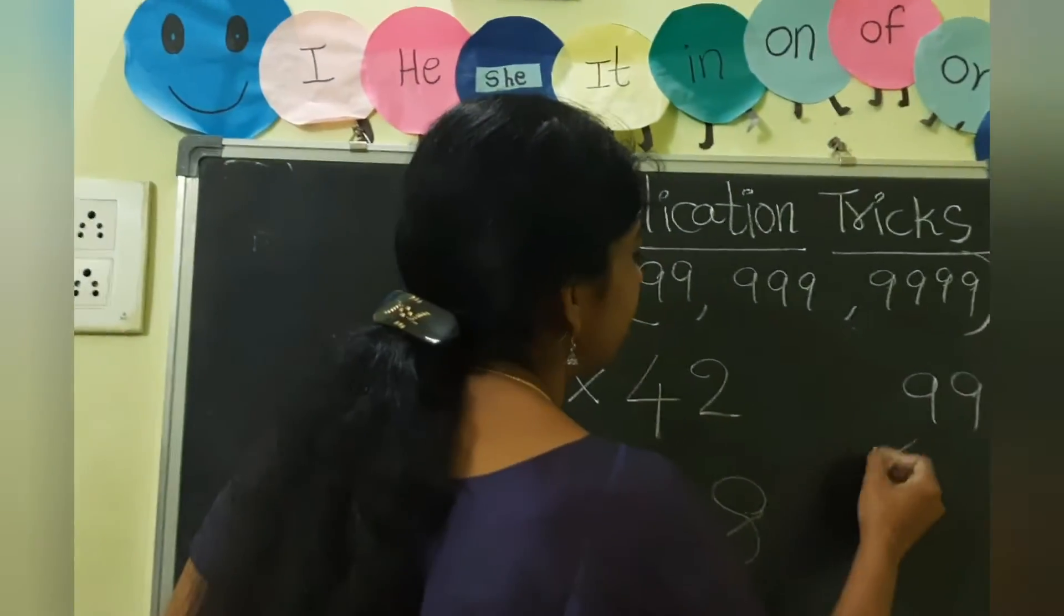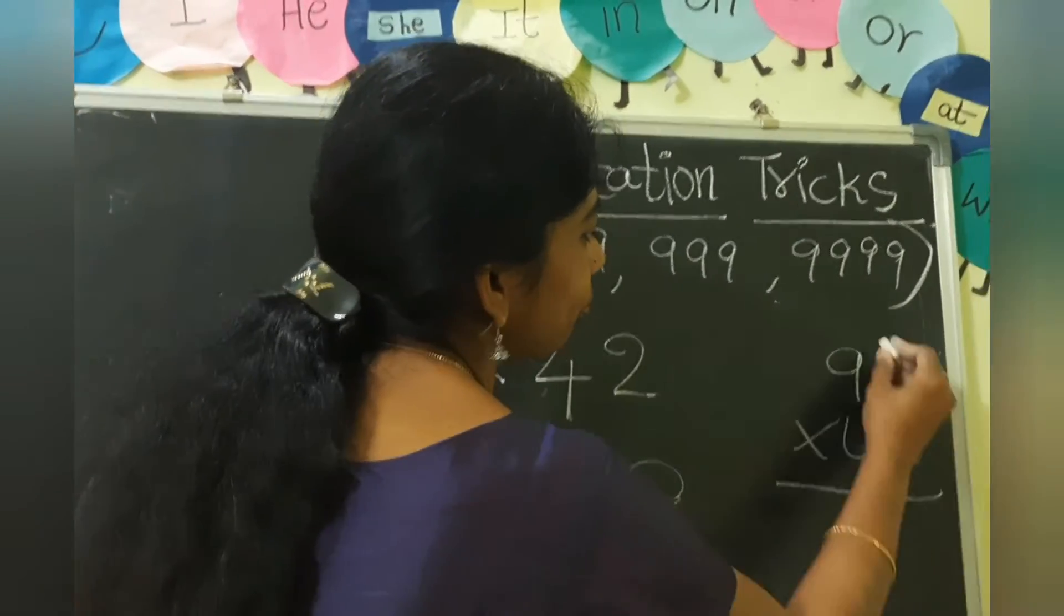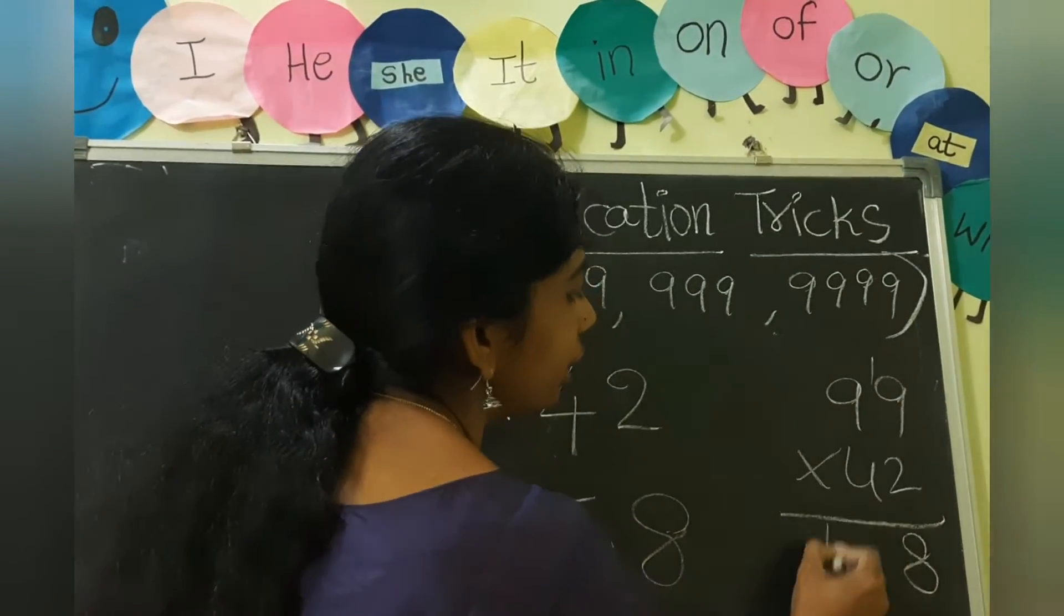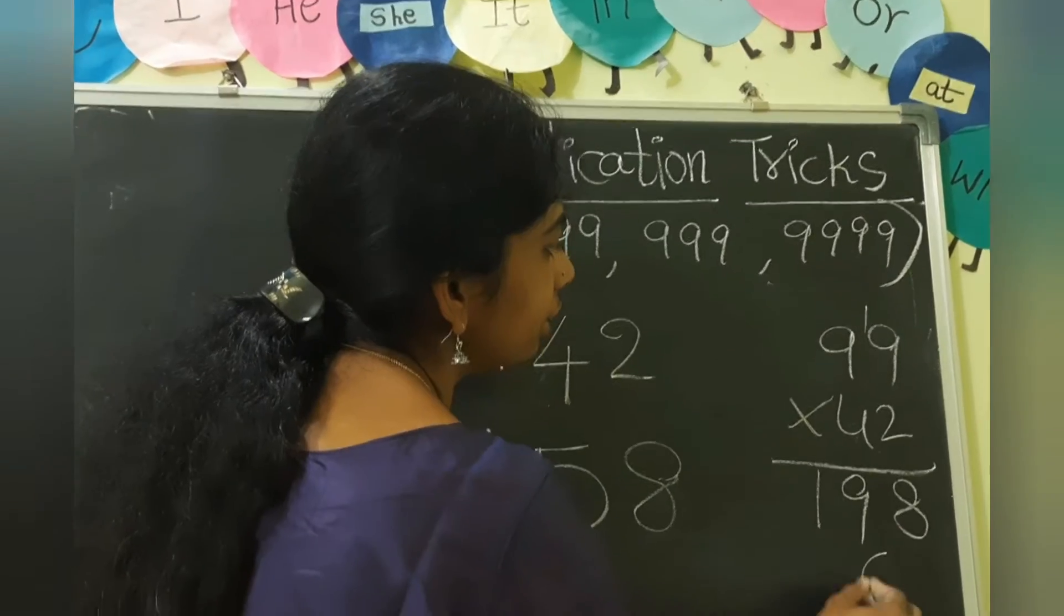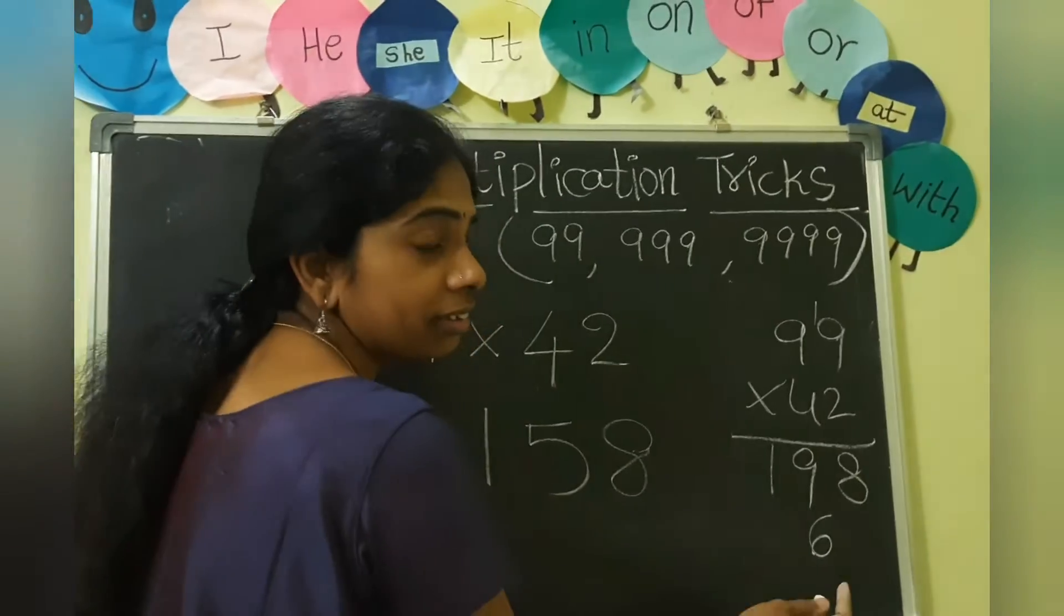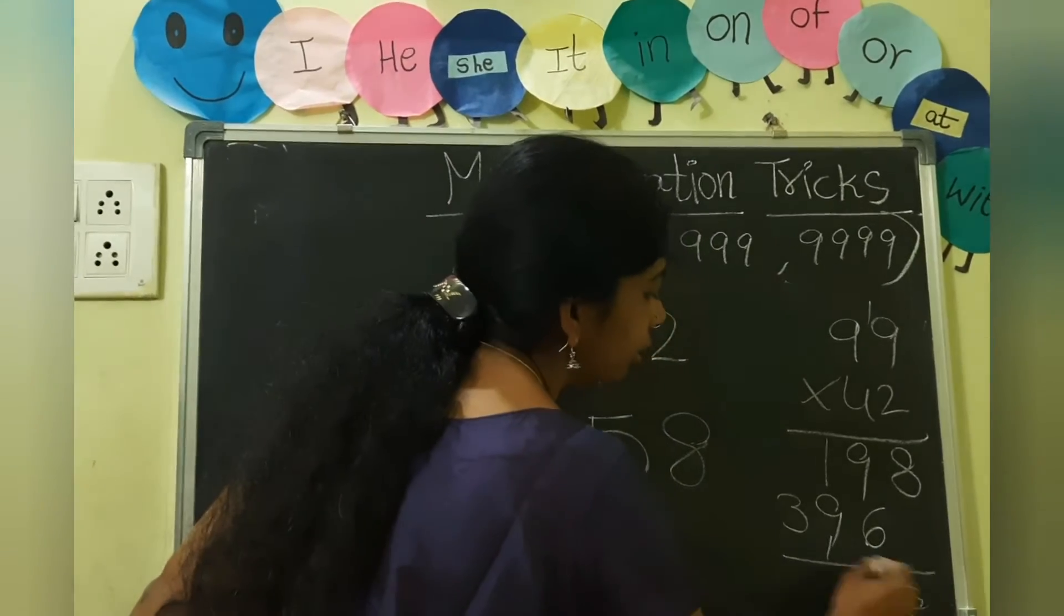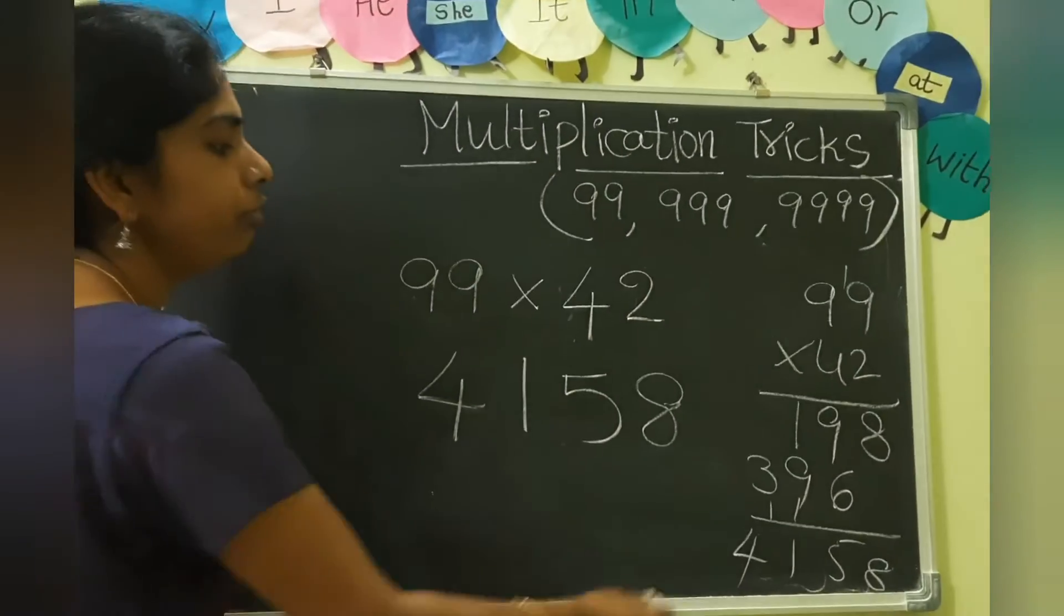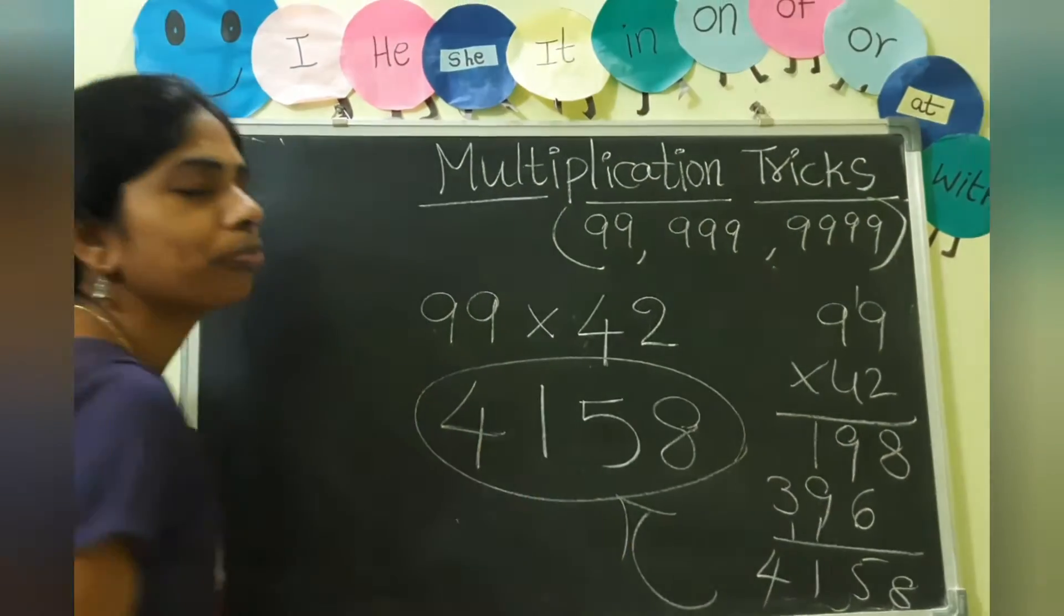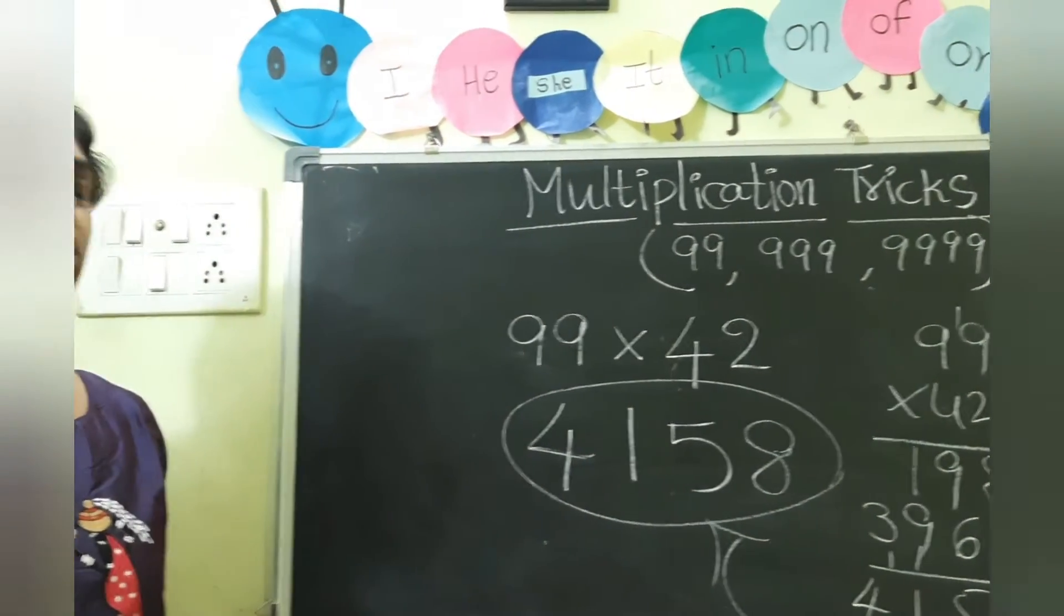Now we will check the answer. 99 into 42. 2 nines are 18. 4 nines are 36. 4 nines are 36, 39. So 8, 15, 11, 4, 1, 5, 8. Our answer is right. So this is the technique, children.